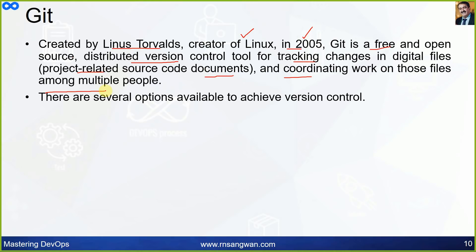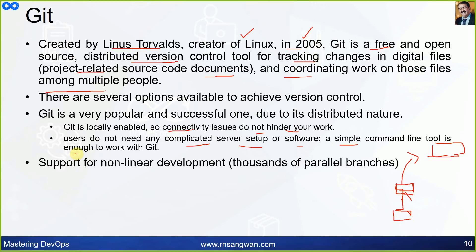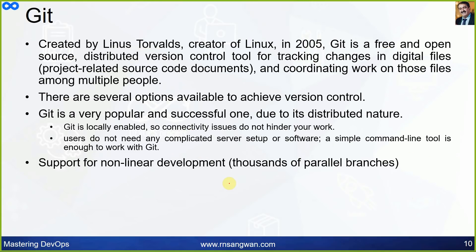Git is very popular due to its distributed nature. Git is locally enabled, so you have a local copy and connectivity issues do not hinder your work. You work on the local repository and when connectivity is available you push the code to the remote repository. Users do not need complicated server setup — a simple command line tool is enough.